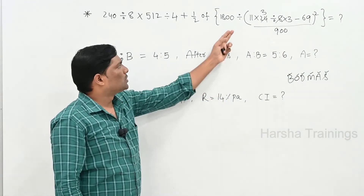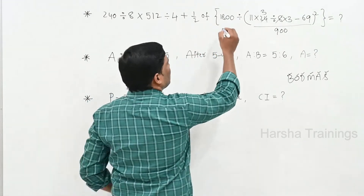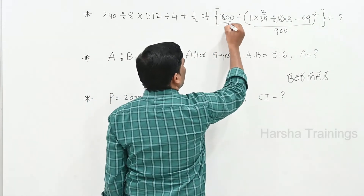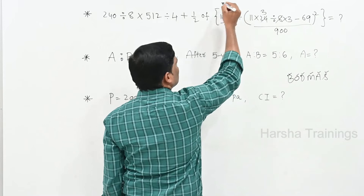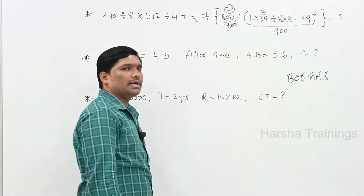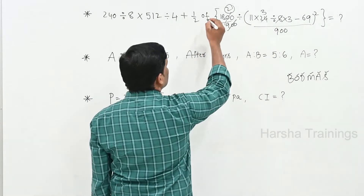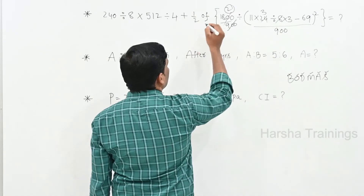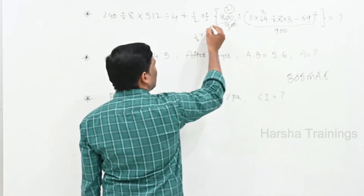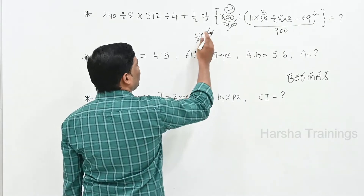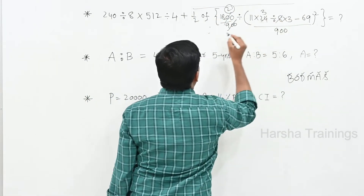Next preference is Division: 1800 divided by 900 equals 2. The bracket part answer is 2. Next preference is 'of' — half and half, which is multiplication. Two twos cancel, giving a final answer for this part.